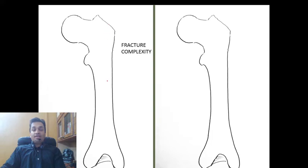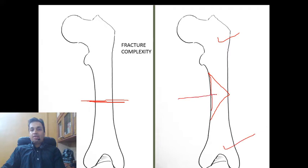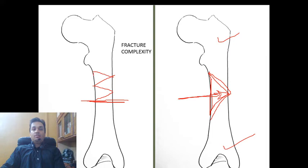The last classification is fracture complexity. A simple fracture has one fracture line dividing the bone into two parts. A wedge fracture divides the bone into three parts: one proximal main fragment, one distal main fragment, and both connected by a triangular fragment called a wedge or butterfly fragment. The butterfly fragment must be well opposed and reduced to ensure stability. A comminuted fracture is where the bone is broken into multiple pieces, and comminuted fractures have a significantly higher rate of malunion and nonunion compared to wedge or simple fractures.